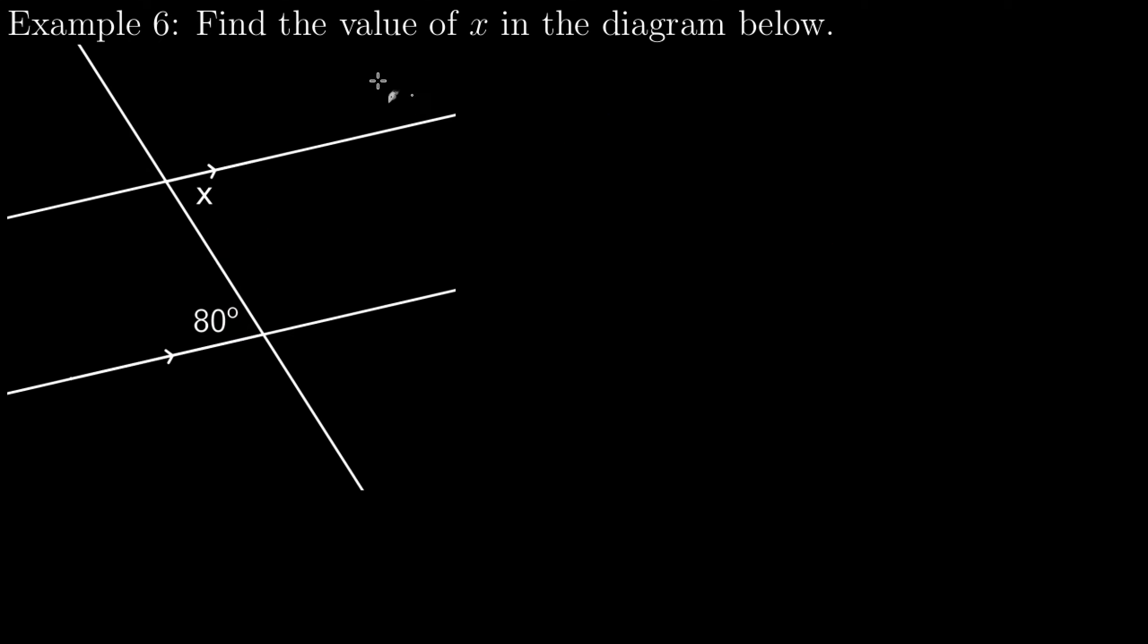Alright, final example. Find the value of x in the diagram below. In this, I notice that I have x and 80 degrees. They both appear to be acute, so I can use that rule to say, if they both appear to be acute, then I know that they both actually have to be equal in this diagram. So x will equal 80 degrees, and I'm done.